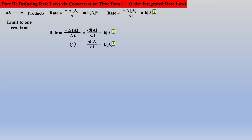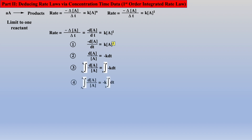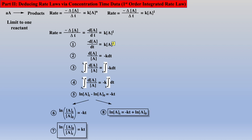Before integration, we group similar terms, introduce our integral from initial concentration to concentration at some time t, and time from 0 to some time t. We pull our constant out of the integral, and after integration we get an integrated first order rate law, which can be rearranged to get two very useful forms of the integrated rate law.